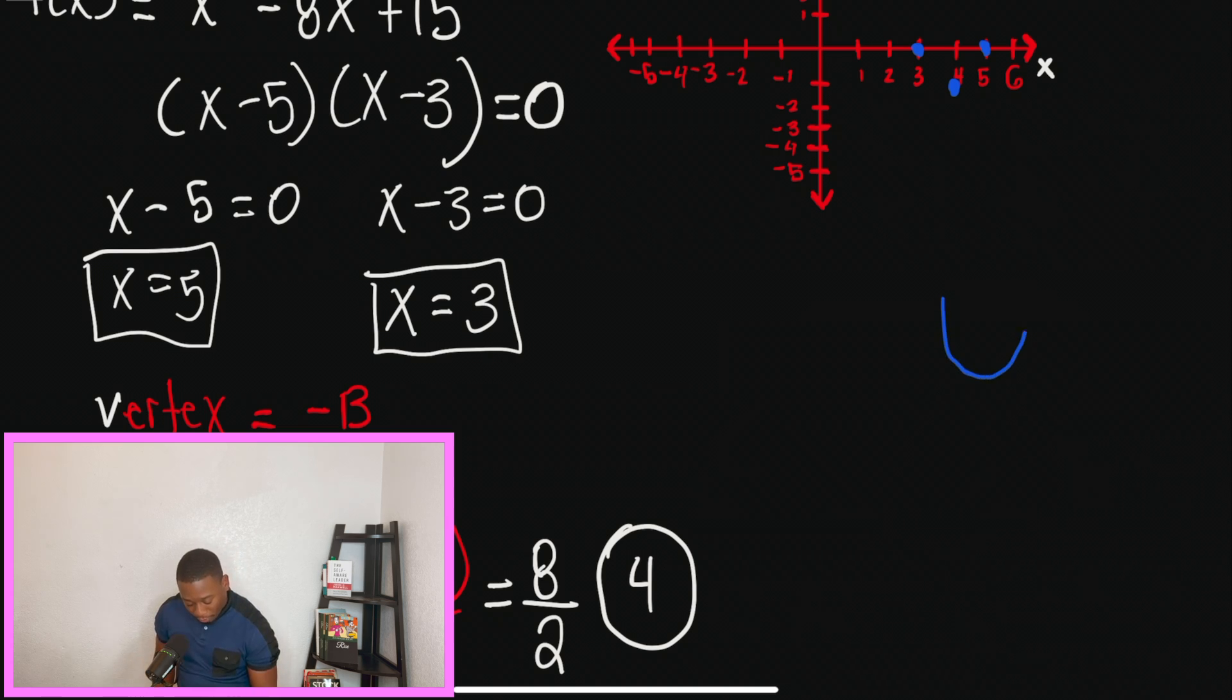And understand that when we're talking about quadratics, we are going to have a U-shaped graph, like what you see. This is how our graph should look, and we're going to need at least 3 points because we have to also get the vertex.